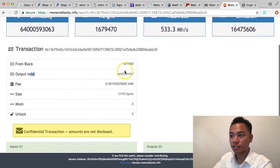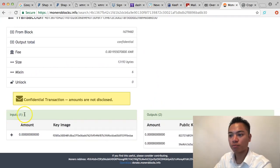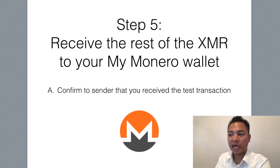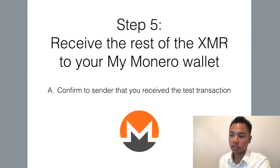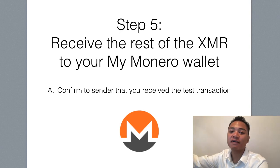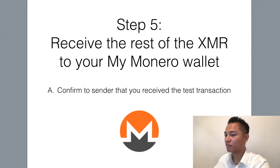Let's go ahead and do step number five, which is to receive the rest of the Monero to the MyMonero wallet. We're going to have to confirm to the sender that you received the test transaction. Since I sent it to myself, I know I received it. However, if you're expecting it from another person, you're going to have to tell them you received the test transaction and to send the rest of the amount now.